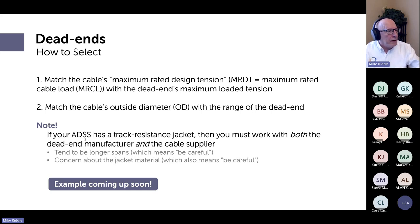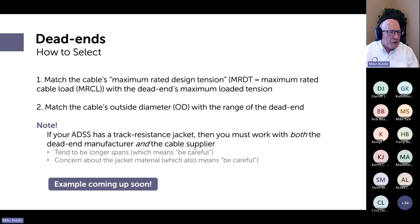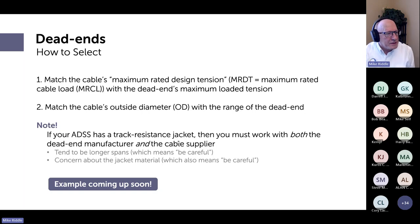Before moving on: if a cable has a tracking resistant jacket, you must work with both the dead end manufacturer and the cable supplier, otherwise you risk both problems and finger pointing. Tracking resistant jacket material is an issue in itself, and when you need a tracking resistant jacket your spans are typically longer, making the situation more challenging.